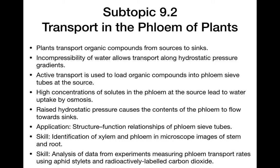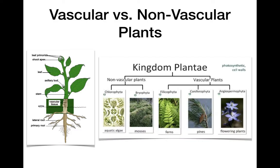First thing first, we talk about vascular and non-vascular plants. This is a term you should be familiar with from topic five — we talked about the four terrestrial plant kingdoms. A major dividing line between different plant kingdoms is whether they are vascular or non-vascular plants. What does the term vascular mean? It should be familiar to you from your reading.